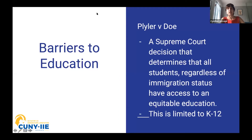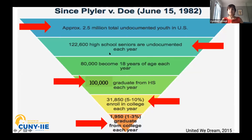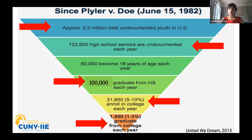Why Plyler v. Doe is important is because it faces a very particular access for schooling for undocumented students but also a barrier. The Supreme Court decision determines everyone has access to an equitable education regardless of immigration status, but it's limited to K through 12. When we look at Plyler v. Doe, we see 2.5 million total undocumented youth in the United States; about 120,000 become seniors every year, about 100,000 graduate from high school, but only 5 to 10 percent enroll in college, and of those only 1 to 3 percent graduate from college.